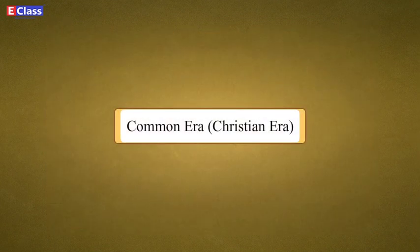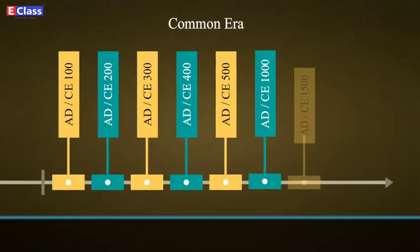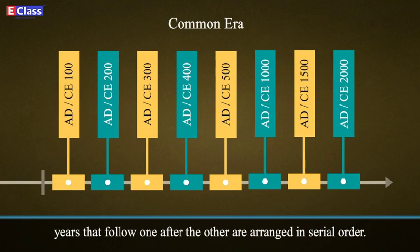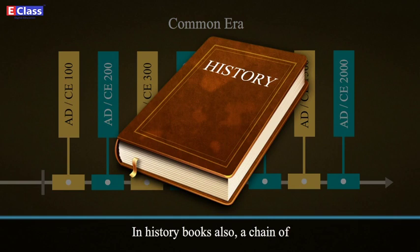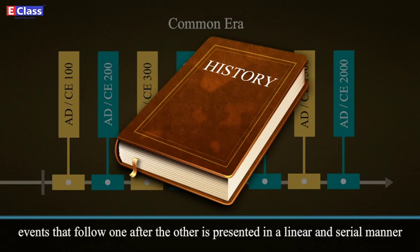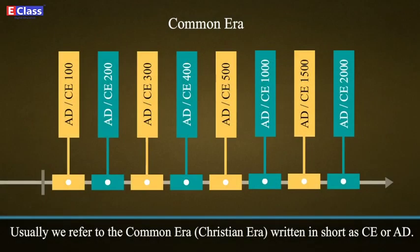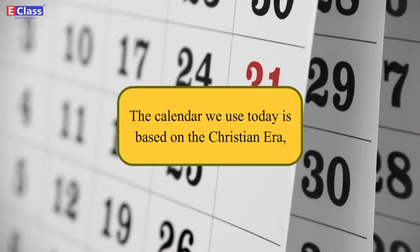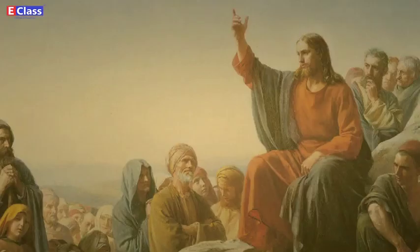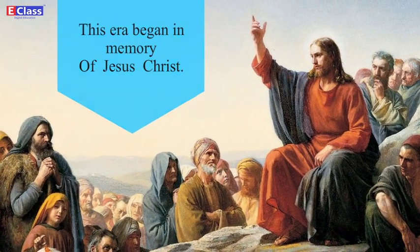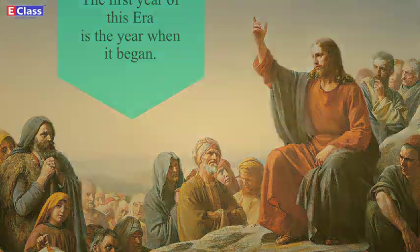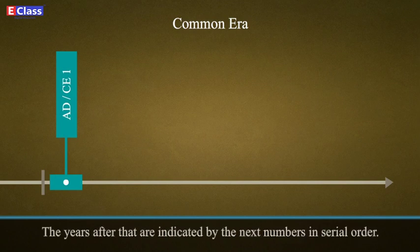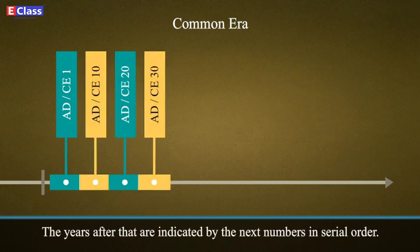In the unilinear division of time, years that follow one after the other are arranged in serial order. In history books, a chain of events is presented in a linear and serial manner. For this, we refer to the Common Era, that means Christian Era, written in short as CE or AD, meaning Anno Domini, which means 'in the year of our Lord.' The calendar we use today is based on the Christian Era, now called the Common Era, which began in memory of Jesus Christ. The first year of this era is shown with the number 1, and the years after are indicated in serial order.